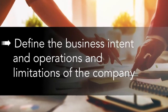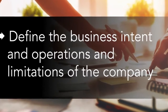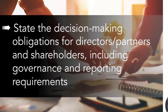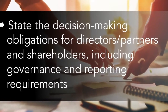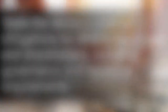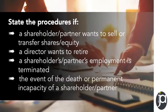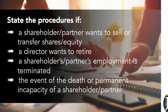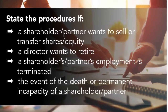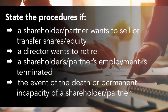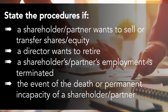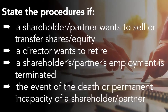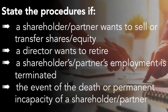The shareholders agreement needs to cover off on business intent. It needs to cover off on your decision-making processes, your obligations, the governance and reporting requirements. It also needs to talk about the transfer of shares and equity — what happens if a director retires or wants to leave, what happens if a shareholder or partner's employment is terminated, and what happens in the event of death or permanent incapacity of a shareholder or partner.